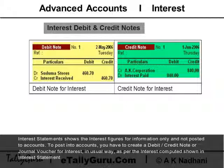Interest debit and credit notes: interest statements show the interest figures for information only and are not posted to accounts. To post into accounts, you have to create a debit/credit note or journal voucher for interest in the usual way, as per the interest computed shown in the interest statement.